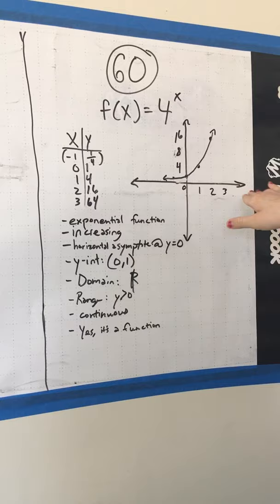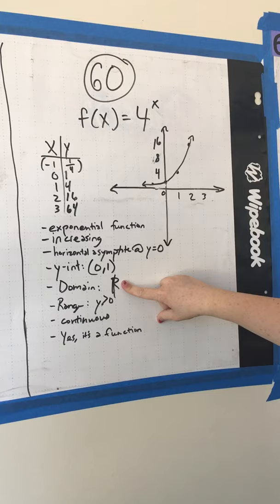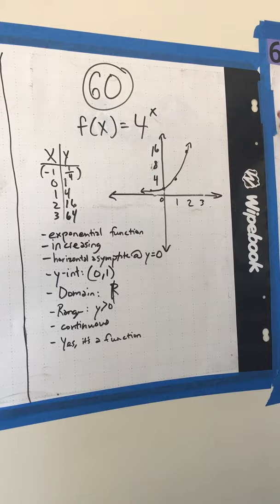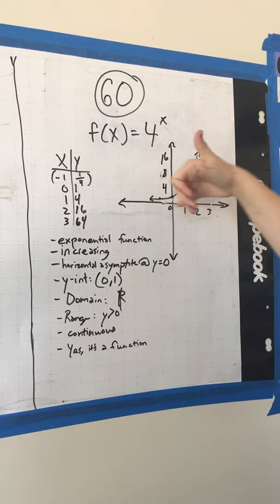And then domain is all real numbers, because you can plug in anything for x, and it'll just get closer over here and then go on forever up there. The range is y is greater than 0, because it can never touch y equals 0.